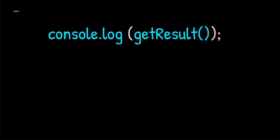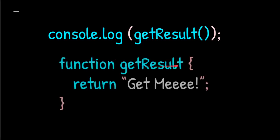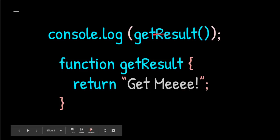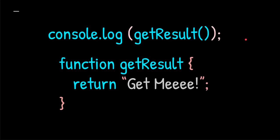Say we have a code statement: console.log getResult. Console.log is the JavaScript function that will print results to the terminal. GetResult is a function that's going to return 'get me.' So when this statement gets fired off, it's going to send out a request, receive back the response 'get me,' and then print it to the terminal.